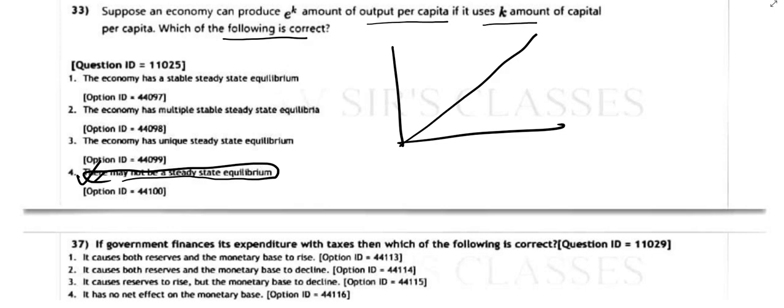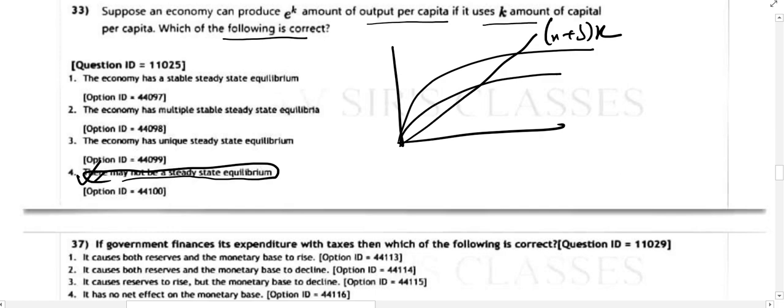In the Solow growth model, the steady state can be represented diagrammatically. We have the y = c + i line, and at the steady state level, investment equals (n + δ)k, where y = f(k) = k to the power alpha. For this production function e^k, we can evaluate the steady state value accordingly. The answer to question 33 is option 4.